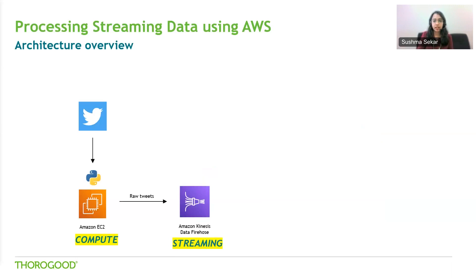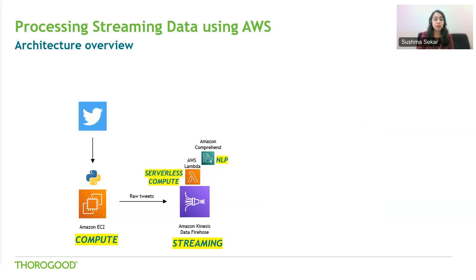Kinesis is the streaming service offered by AWS. As part of Amazon Kinesis Data Firehose, the raw tweets — the source records — are transformed using AWS Lambda. The Lambda function makes use of Amazon Comprehend for detecting the sentiment of tweets. Lambda is the serverless compute service offered by AWS. The records containing the tweets and their sentiments are further converted to Parquet format for easy analysis and better storage, and are delivered to an Amazon S3 bucket when the buffer condition is reached.